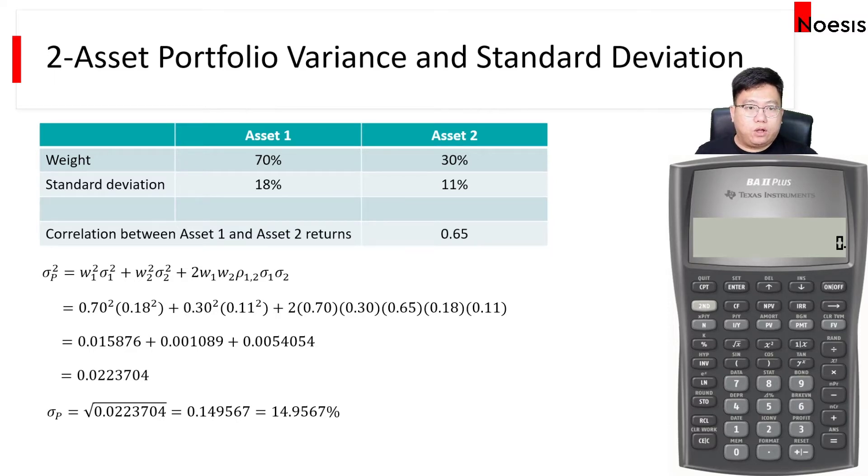So in your calculator, what you will first do is type the first term, which is 0.7 squared times 0.18 squared. So I can do something like 0.7, the weight times the standard deviation, and then once I get the product, I will square it. So that gives me the first term. I will now use the store function. I'll press store 1. So that saves the number into the first button, button number 1.